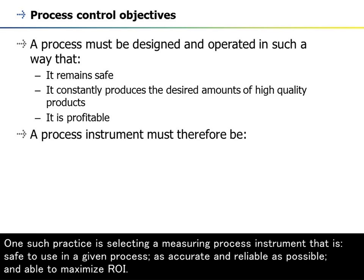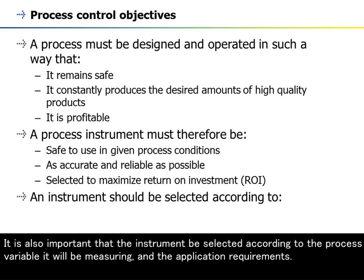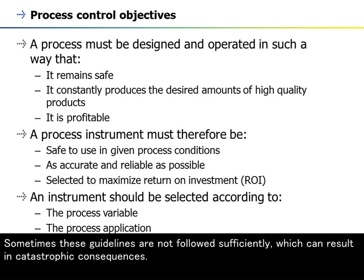One such practice is selecting a measuring process instrument that is safe to use in a given process, as accurate and reliable as possible, and able to maximize ROI. It is also important that the instrument be selected according to the process variable it will be measuring and the application requirements. Sometimes these guidelines are not followed sufficiently, which can result in catastrophic consequences.